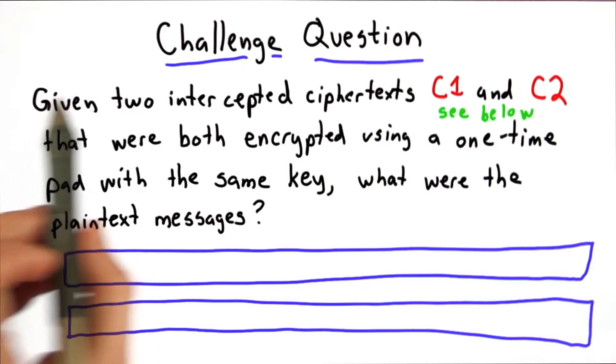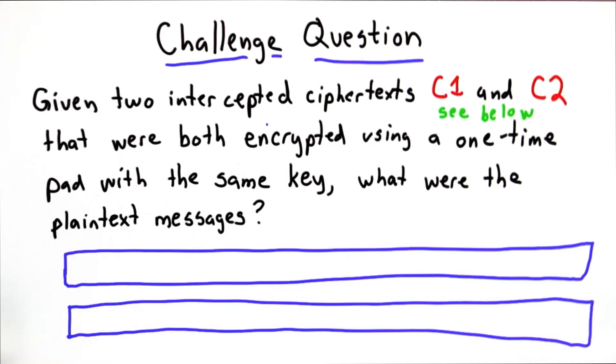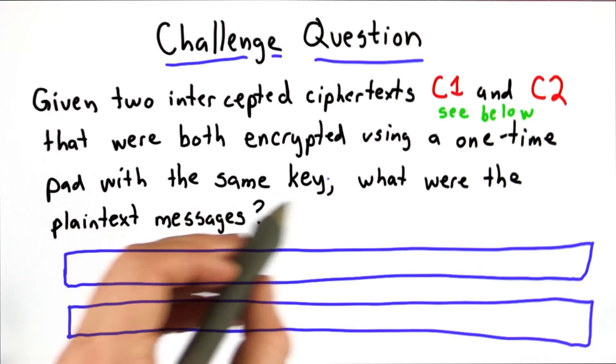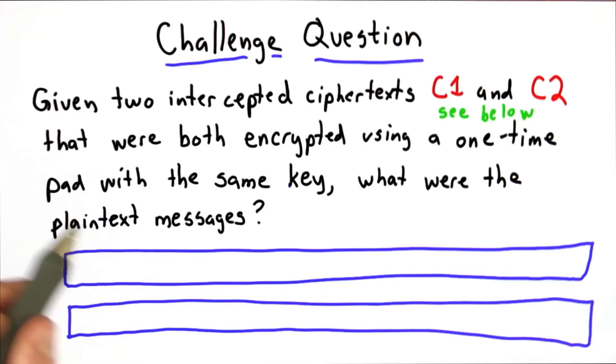The challenge question is: you're given two intercepted ciphertexts, C1 and C2, which you can see below. They were both encrypted using a one-time pad with the same key, and they're both messages in standard English. Your goal is to figure out what the two plaintext messages were.